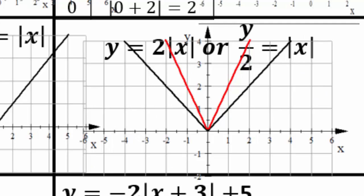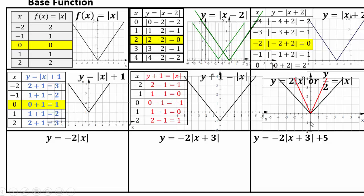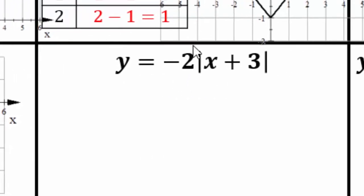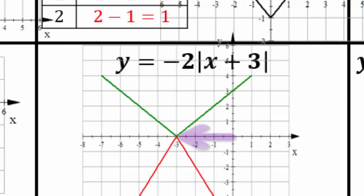If you multiply by negative 2 instead of positive 2, all the y values become negative: (0,0) stays (0,0), (1,2) becomes (1,-2), (-1,2) becomes (-1,-2). For negative 2 times |x plus 3|: apply order of operations — do x plus 3 first, which shifts the graph left 3. Then multiplying by negative 2 reflects it across the x-axis and stretches it vertically by a factor of 2. So (-2,1) becomes (-2,-2) and (4,1) becomes (-4,-2) ... wait, correcting: the transformed points reflect and stretch accordingly.